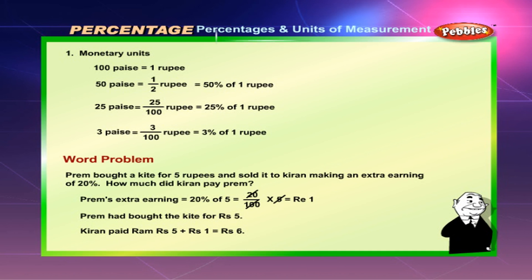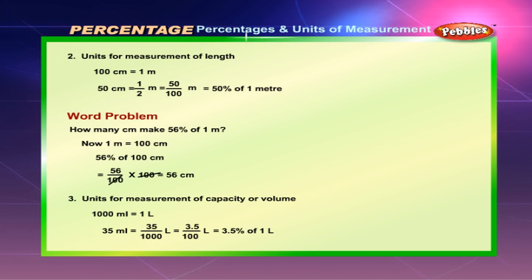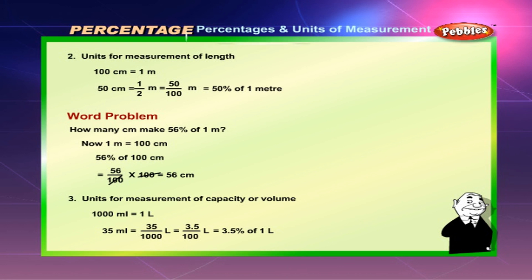Units for measurement of length: 100 cm = 1 meter. 50 cm = ½ meter = 50/100 meter = 50% of 1 meter. Word problem: How many centimeters make 56% of 1 meter? Since 1 meter = 100 cm, 56% of 100 cm = 56/100 × 100 = 56 cm.